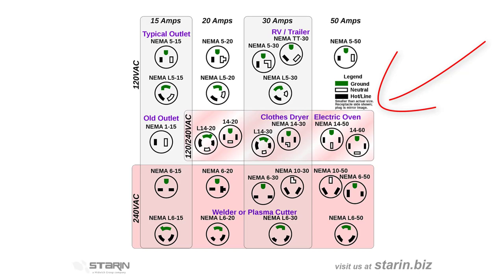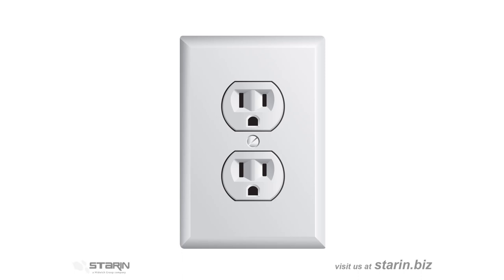Most of the products we work with use simple 15 amp circuits, which use this familiar connection. While a lot of old timers just call this an Edison plug, the real name is NEMA 5-15. It has two vertical prongs for live and neutral and the third peg for earth ground.